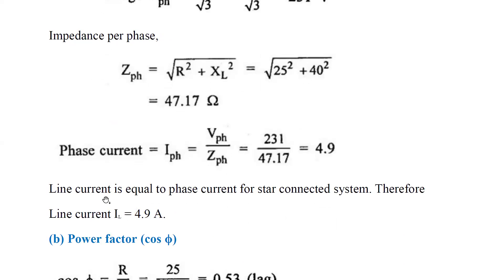In a star connected system, line current is equal to the phase current. So IL equals I_phase, which gives us IL equal to 4.9 amperes.